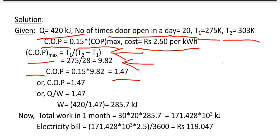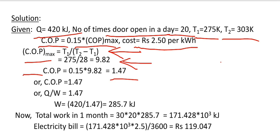We know that the COP of a refrigerator is defined as the desired effect per unit work input. Here our desired effect is to remove the heat, and the input is the work given to the refrigerator. From here we get the value of work given to the refrigerator, which is 285.7 kJ.